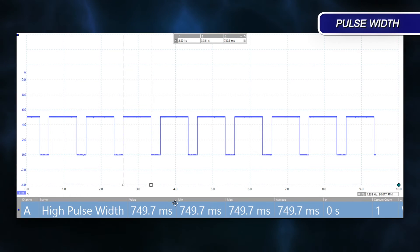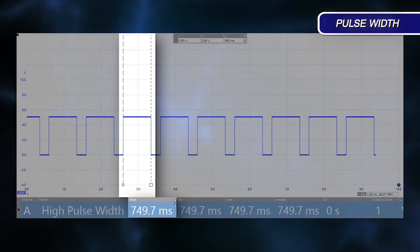On the oscilloscope, we have a cycle of one second. So our pulse width is 750 milliseconds.